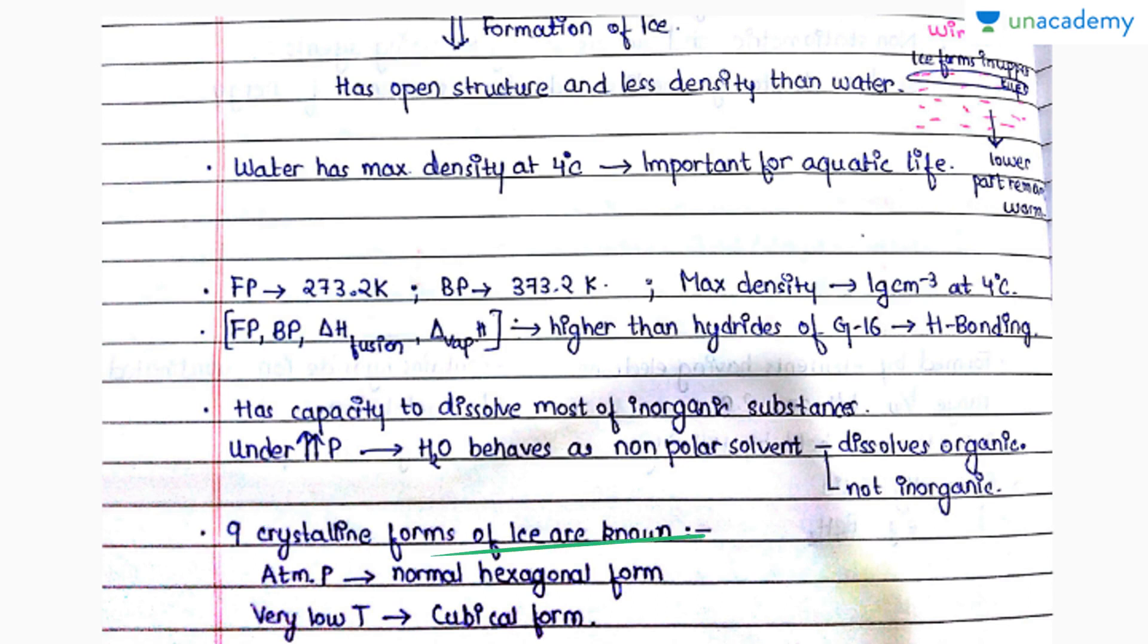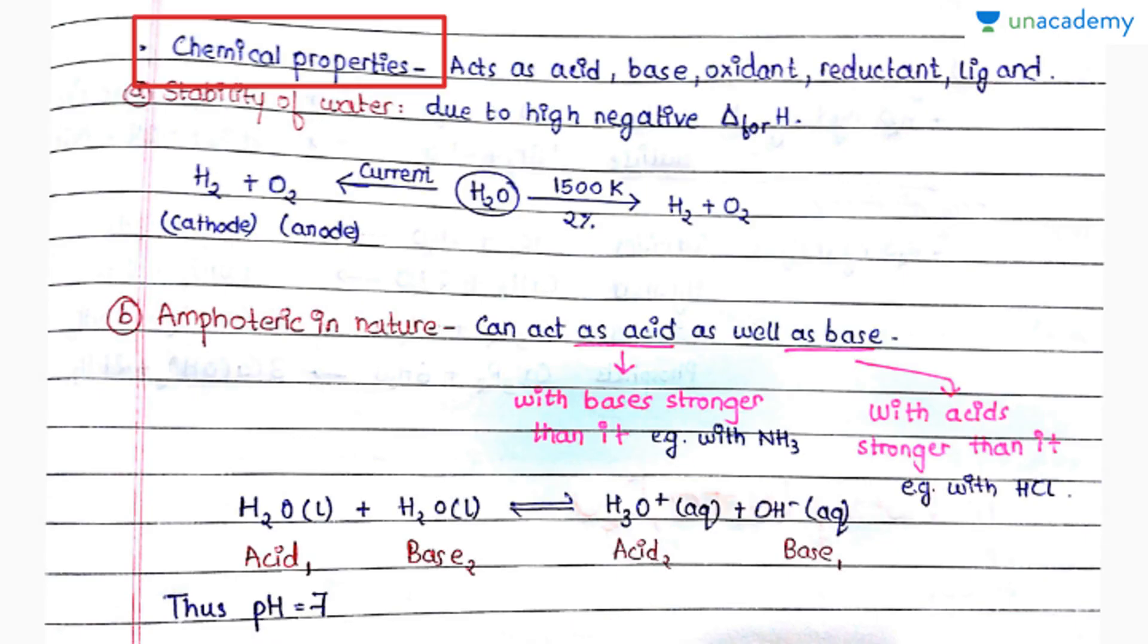Two important of them are: at atmospheric pressure, normal hexagonal form is shown, but at very low temperature ice takes the cubical form—not cubical form as we find in our trays, but cubical structure in its bond formation.